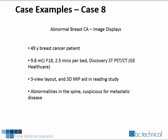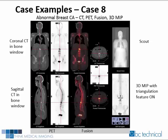Case 8 is the case of a 49-year-old breast cancer patient referred for an F-18 bone scan. The injected dose was 9.8 mCi of F-18. Approximately 45 minutes after injection, the patient was scanned using a GE Discovery ST scanner at 2.5 minutes per bed position in 2D mode. The three-plane overview with CT, PET, and fusion of the patient's torso shows abnormal uptake in the spine. The 3D MIP in the lower right also provides a triangulated view of this area of interest.